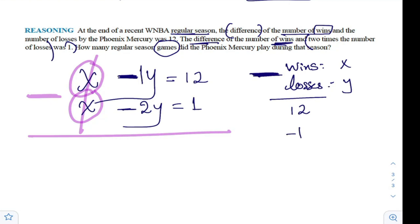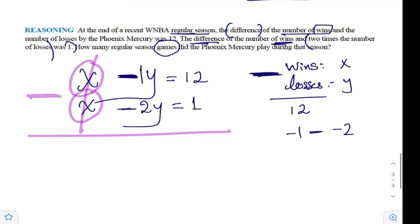So minus 1 minus minus 2. Minus 1 minus minus 2, so it's minus 1 plus 2, which is 1. So it's 1y or y. We don't say 1y, we don't say I have one car, I have a car. Equals 12 minus 1, which is 11.